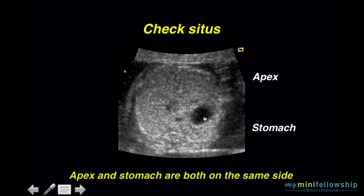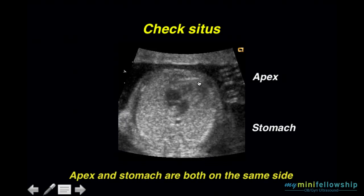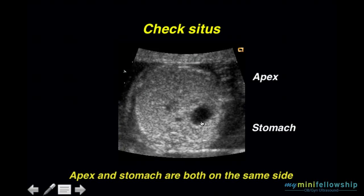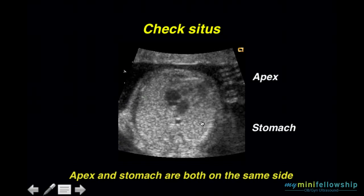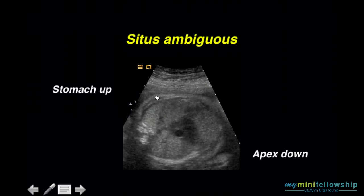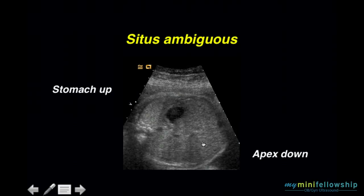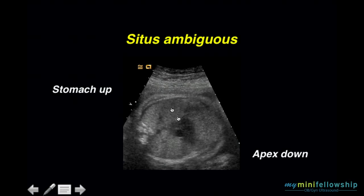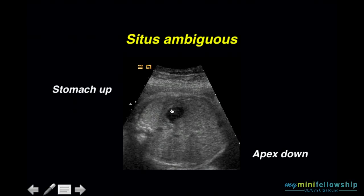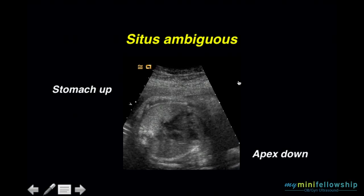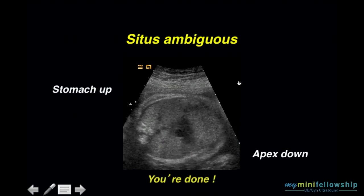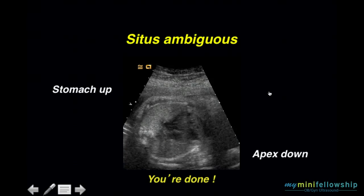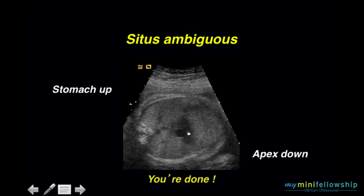Again, I want to observe that the apex and the stomach are on the same side — apex and stomach on the same side. Here we have an instance where the apex is down and the stomach is up. Apex down, stomach up. As soon as you observe that, you're done. That is situs ambiguous, and we need to refer for an echocardiogram.